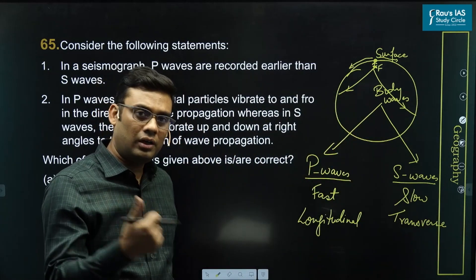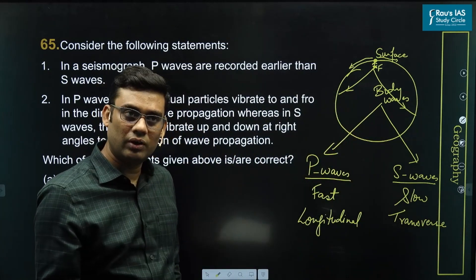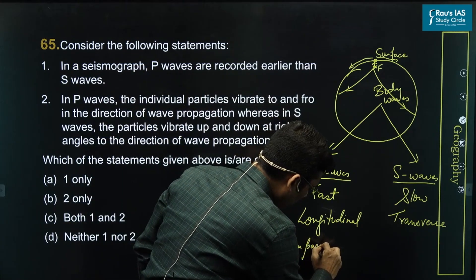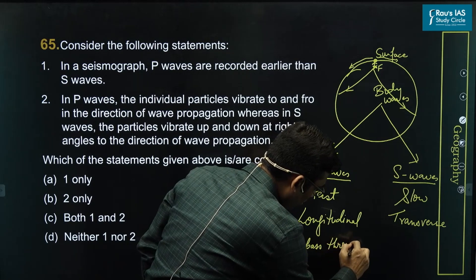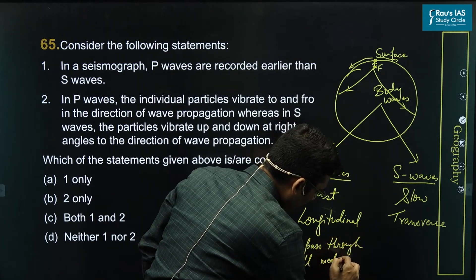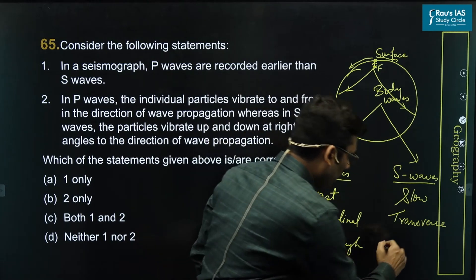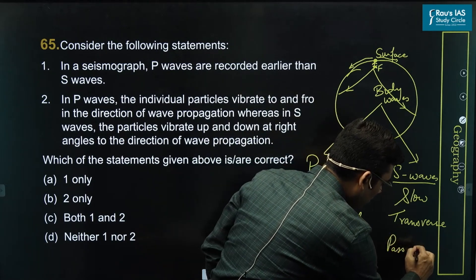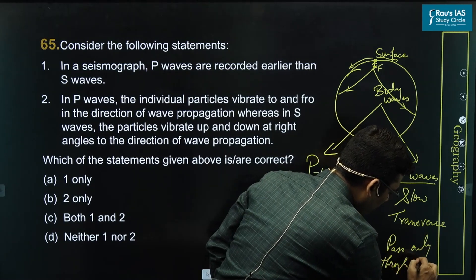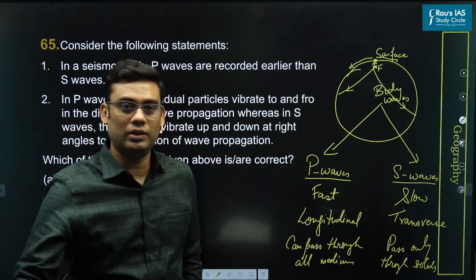And the third difference that we see between these two waves is where P waves can pass through all the mediums, whereas S waves can pass only through solids. So these are three basic differences.